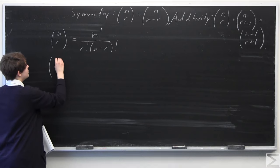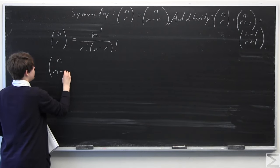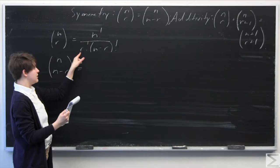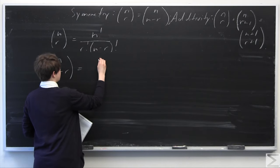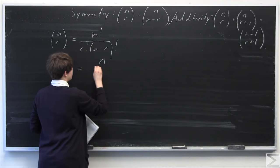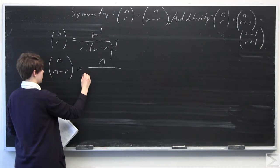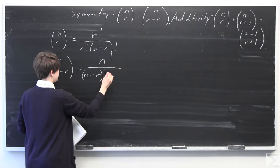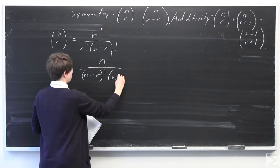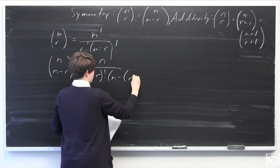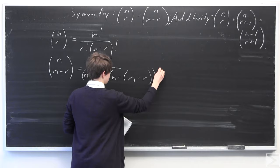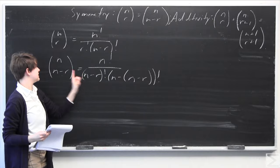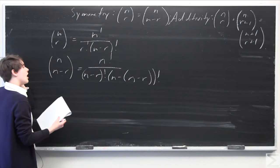On the right-hand side we have n-choose-(n minus r). Basing this off of the definition formula, we know that n-choose-(n minus r) is going to be equal to n factorial over — in the denominator — (n minus r) factorial times (n minus quantity (n minus r)) factorial.